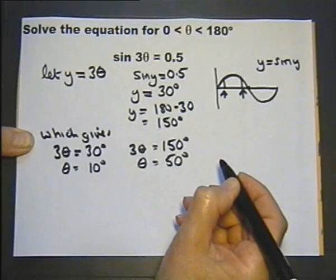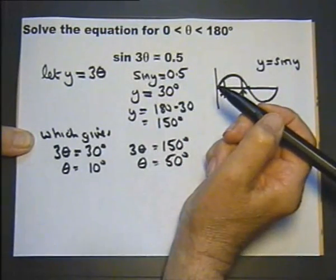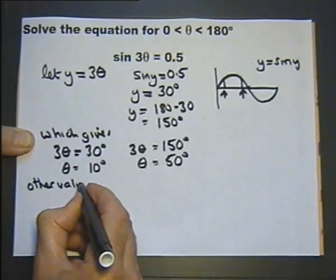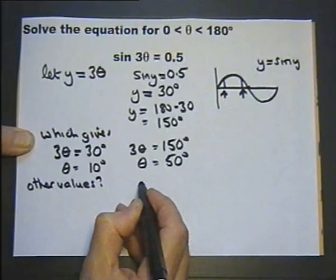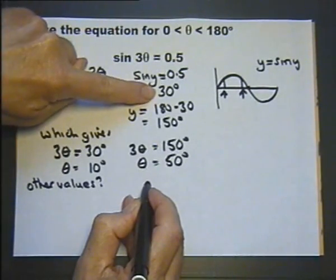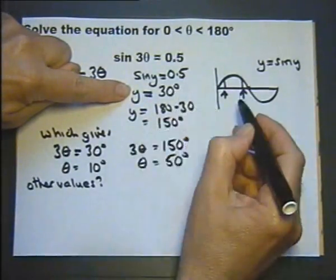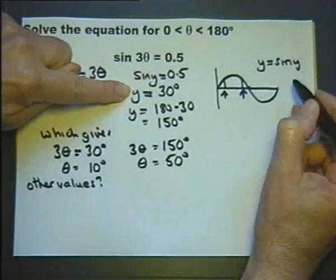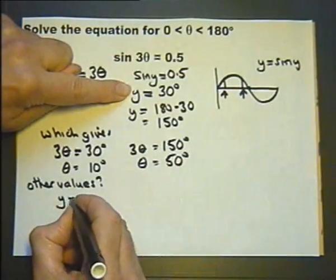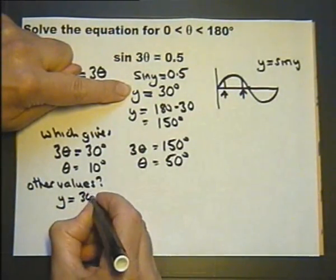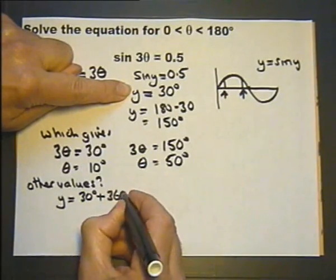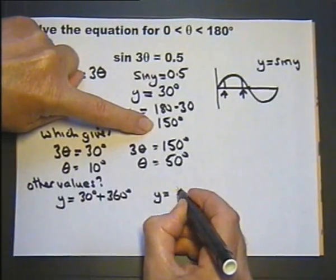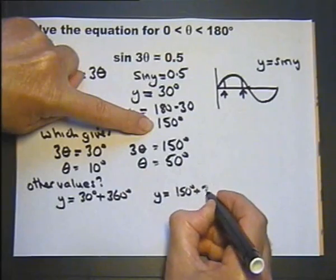But possibly those are not the only answers within this range, so let's see if there are other values. Going back, if we add 360 degrees to that, we get another cycle of the sine curve and another possible value of y. So y could also equal 360 added on to the 30. Similarly, y could also equal 360 added on to the 150 degrees.